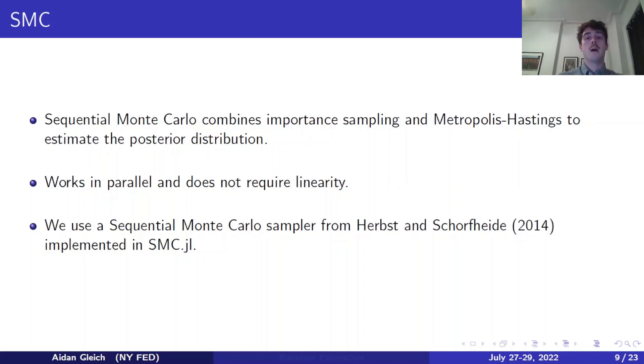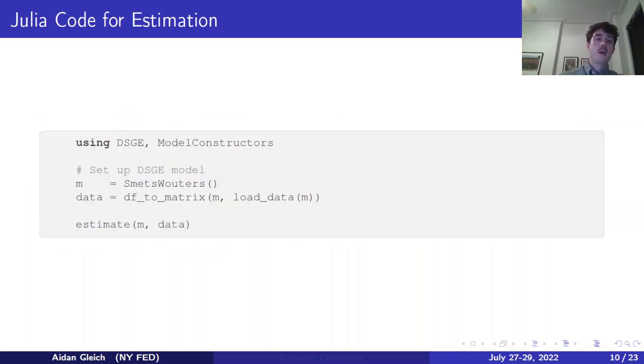SMC is an algorithm that combines importance sampling and Metropolis-Hastings to estimate the posterior distribution. A couple benefits of using SMC is that it is very easy to parallelize, and it also does not require linearity. Now, the state-space model that I showed you before was linear, but some DSGE models, many DSGE models, are not linear. And we're still able to use SMC for those models. Specifically, we're using a sequential Monte Carlo sampler from Herbst and Schorfheide, a 2014 paper by Herbst and Schorfheide. And we've implemented that algorithm in our package, SMC.jl. And you can see here, using our package, DSGE.jl, and then SMC.jl, you are able to initialize and then estimate a DSGE model using only a few lines of code.